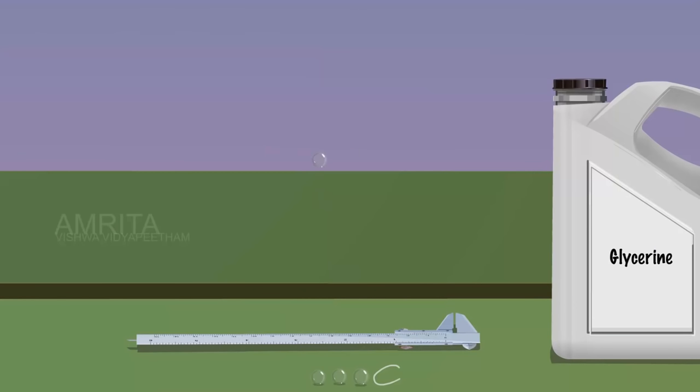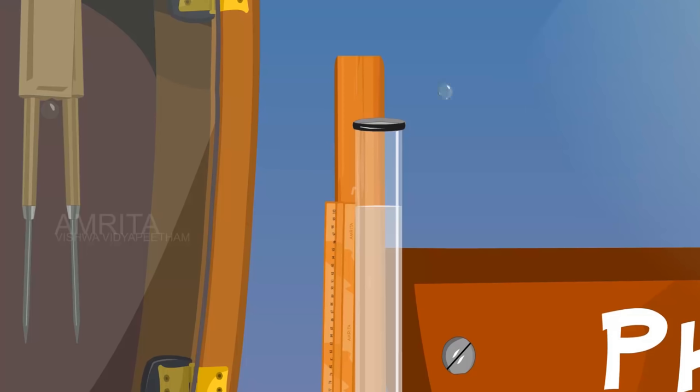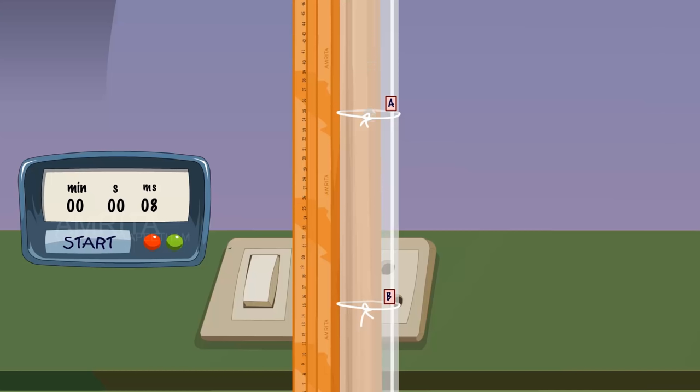Now, take another bead of diameter 5 mm and drop it gently into the liquid. A stopwatch is switched on when the bead crosses point A and switched off when it leaves point B. Note the time taken by the bead to travel the distance 20 cm.